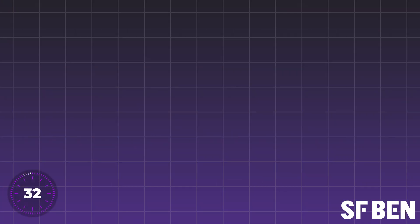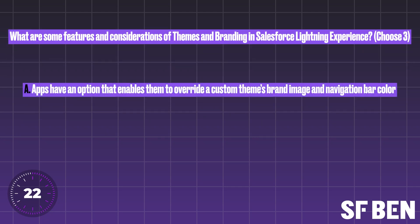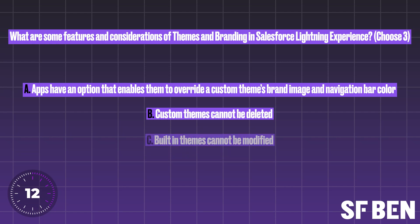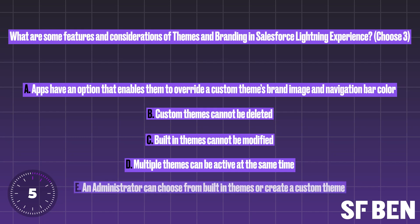Question five. What are some features and considerations of themes and branding in Salesforce Lightning Experience? Choose three options. A: Apps have the option that enables them to override a custom theme's brand image and navigation bar color. B: Custom themes cannot be deleted. C: Built-in themes cannot be modified. D: Multiple themes can be active at the same time. E: An administrator can choose from built-in themes or create a custom theme. The three correct answers here are A, C and E.